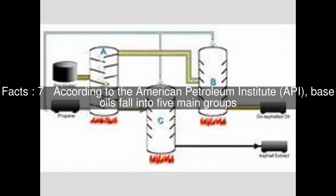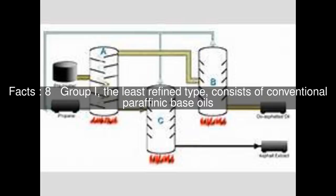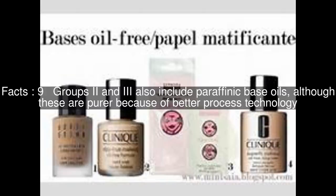According to the American Petroleum Institute, base oils fall into five main groups. Group I, the least refined type, consists of conventional paraffinic base oils. Groups II and III also include paraffinic base oils, although these are purer because of better process technology. Group IV consists of synthetic oils, while Group V includes, among others, naphthenic oils.